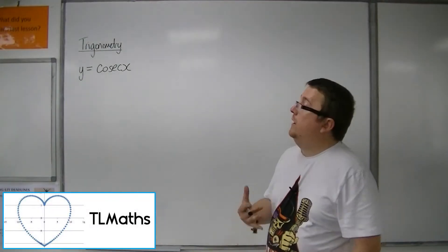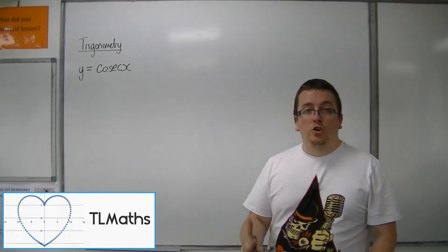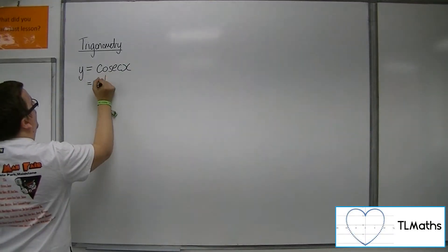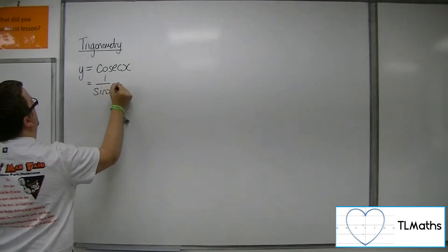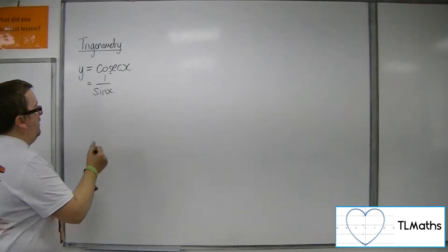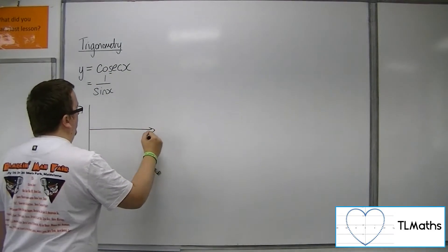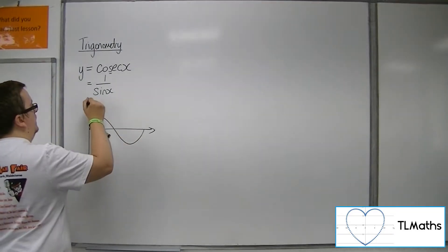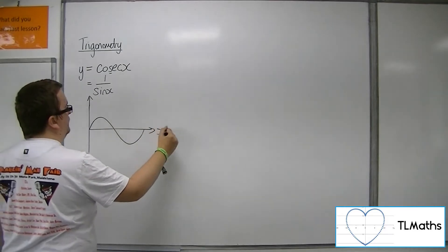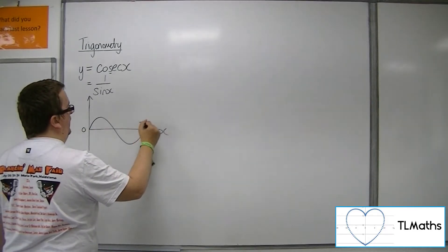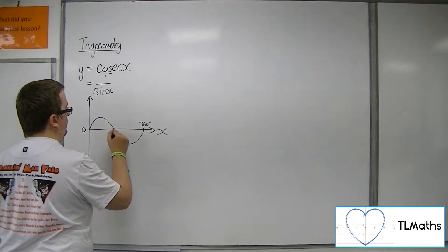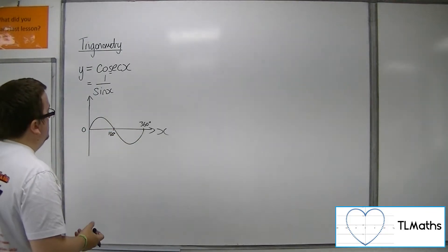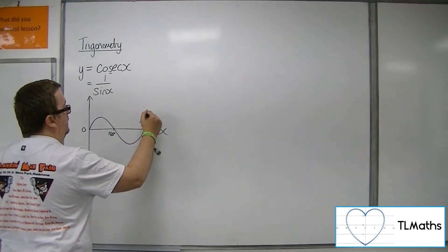So what does y equals cosec actually look like? Cosec x is 1 over sine x — remember that third letter rule. So if we quickly sketch sine, here's my sine graph from 0 up to 360, or you can do it in radians if you like, so 2 pi, pi.